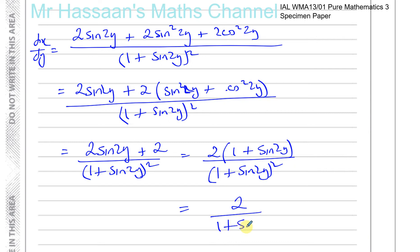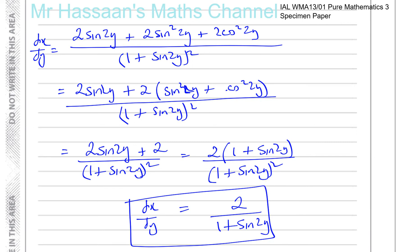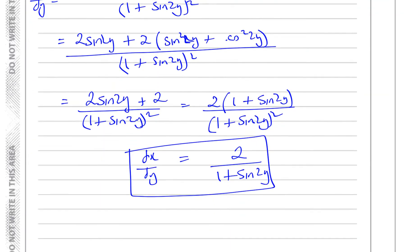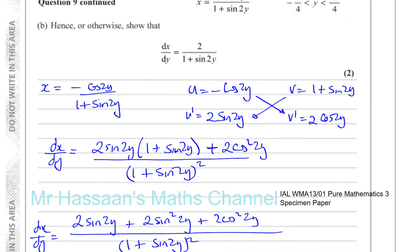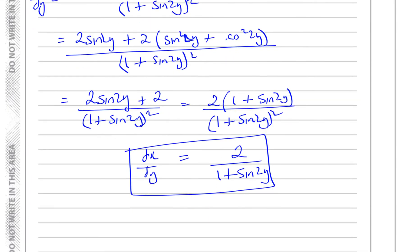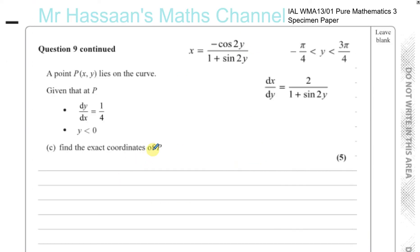That's the answer to part B — just using the quotient rule and then simplifying using identities and cancelling common factors. Now on to part C. It says at a point P(x, y) on the curve, given that dy/dx is a quarter and y is less than 0, find the exact coordinates of P. We know that dy/dx equals a quarter. What we found is dx/dy, so dy/dx is going to be 1 plus sine of 2y divided by 2.